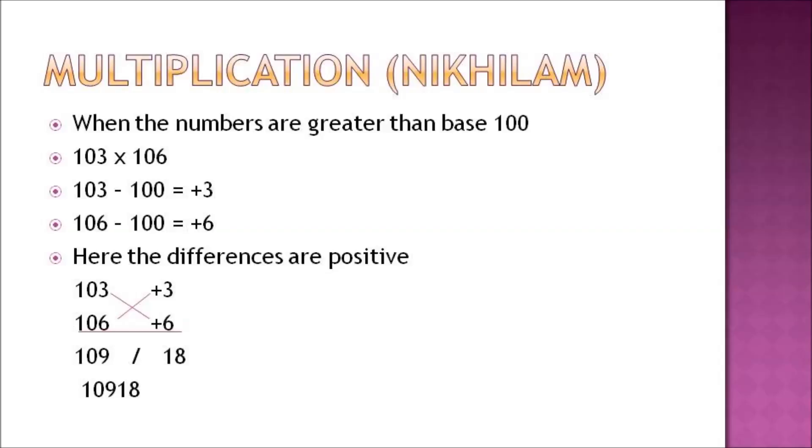Hence we add 103 and 6 to get 109, and we add 106 to 3 and again get 109. This is the first part. 3 × 6 gives 18. This is the second part. The answer is 10,918.